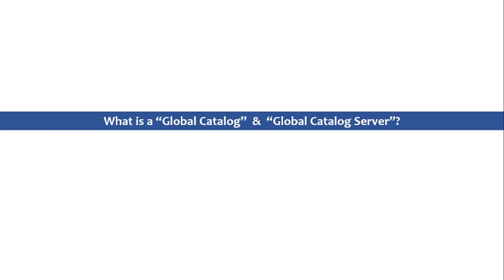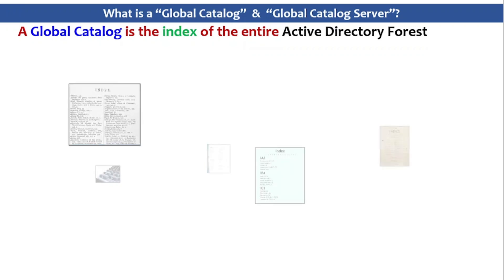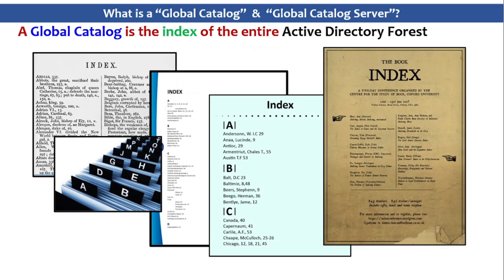So what is a Global Catalog and a Global Catalog server? A Global Catalog is the index of the entire Active Directory forest. We have seen the index of a book — we browse through the index and go to the required page. Same thing in Active Directory: we can query the Global Catalog and find objects in the entire forest, not just the domain. That's the core concept behind Global Catalog.